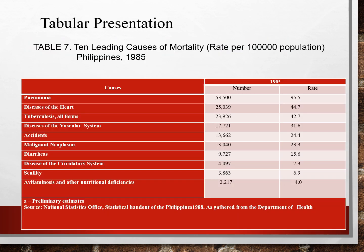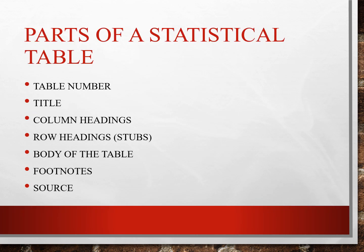Tabular presentation, on the other hand, uses tables to present data. This would be a table on 10 leading causes of mortality. We have to remember that your table should be labeled appropriately. Parts of which would include the table number, the title, the column headings, row headings, body of the table, footnotes, and the source of the table.